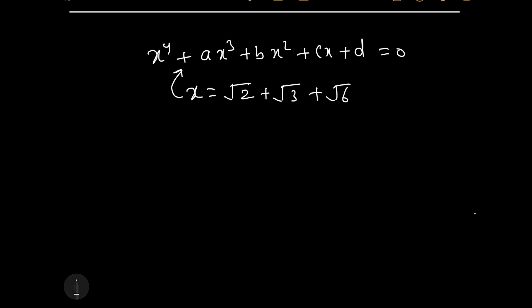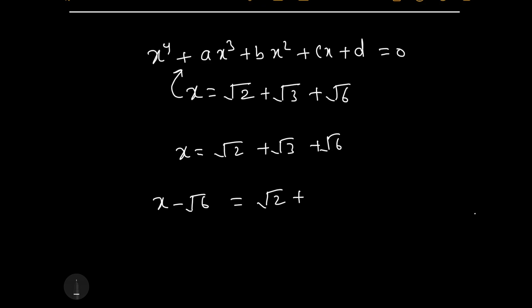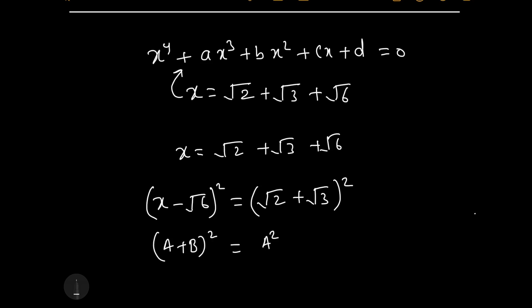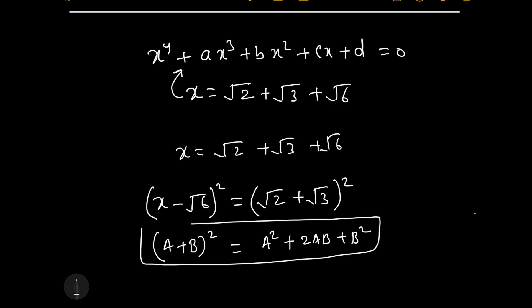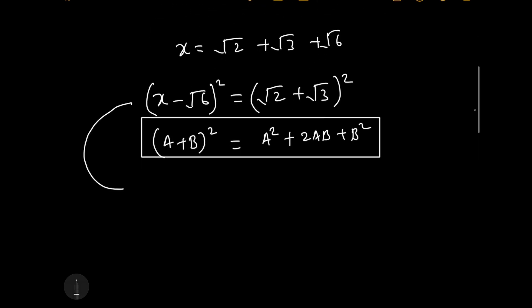We start with x equals square root 2 plus square root 3 plus square root 6. Rearranging, we write x minus square root 6 equals square root 2 plus square root 3. Now we square both sides, using the identity (a plus b) squared equals a squared plus 2ab plus b squared. This gives us x squared minus 2x·square root 6 plus (square root 6) squared on the left-hand side.